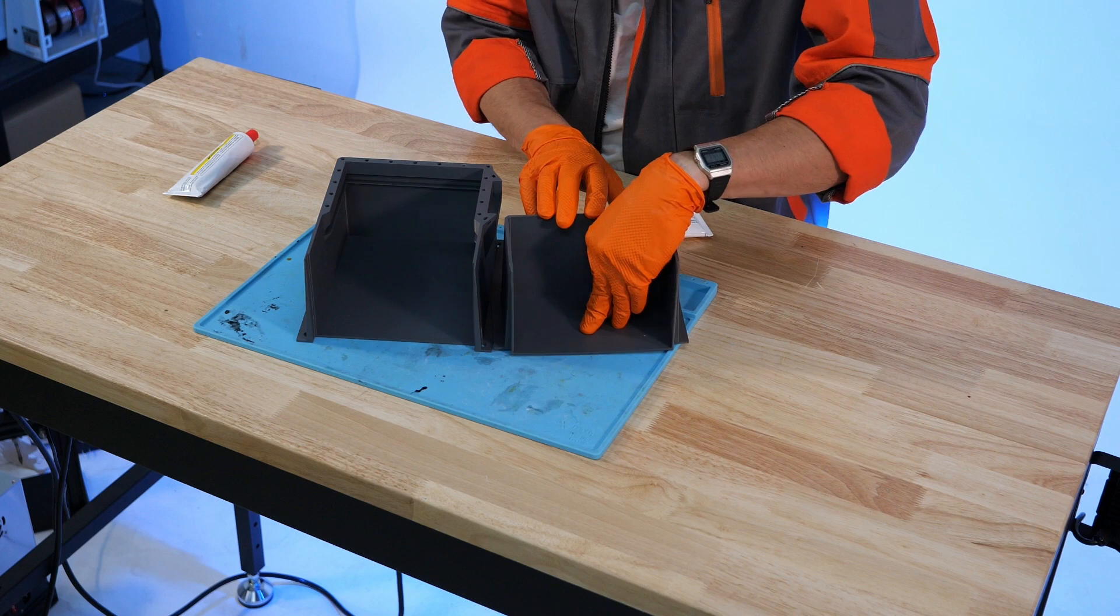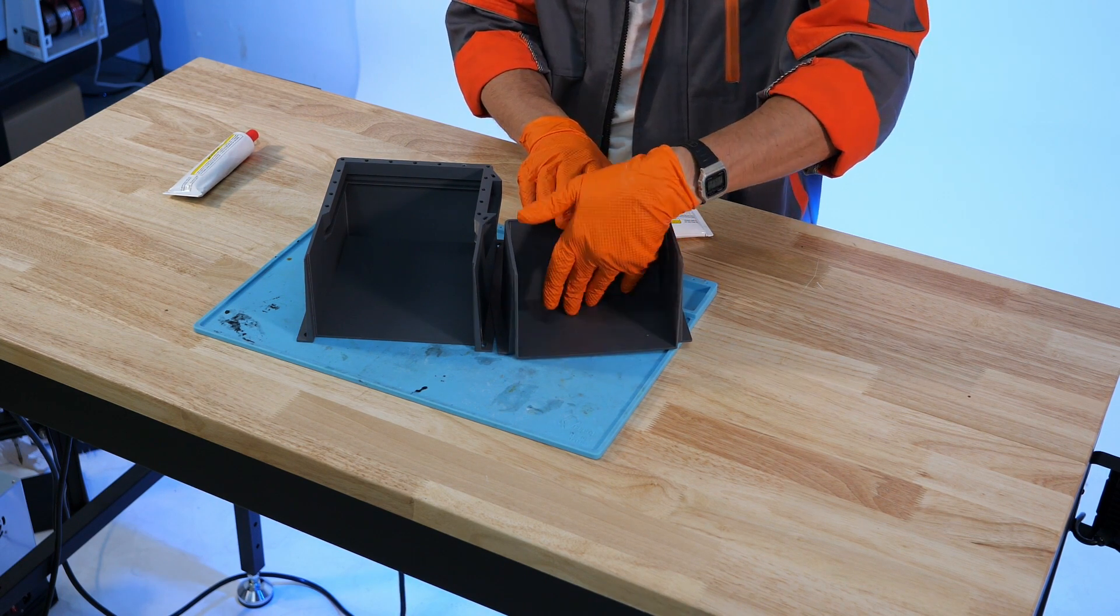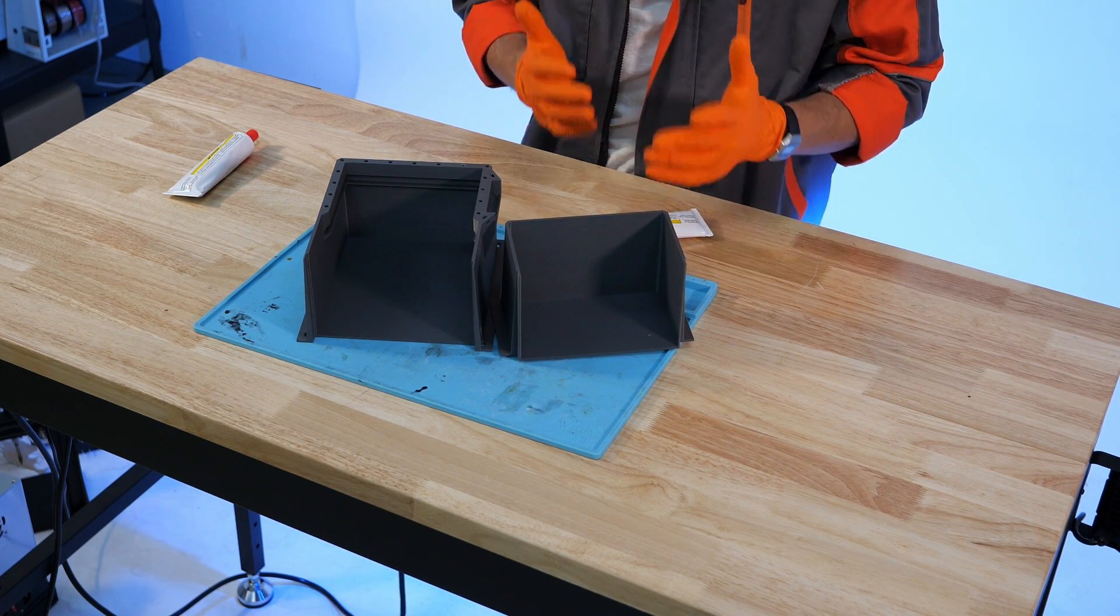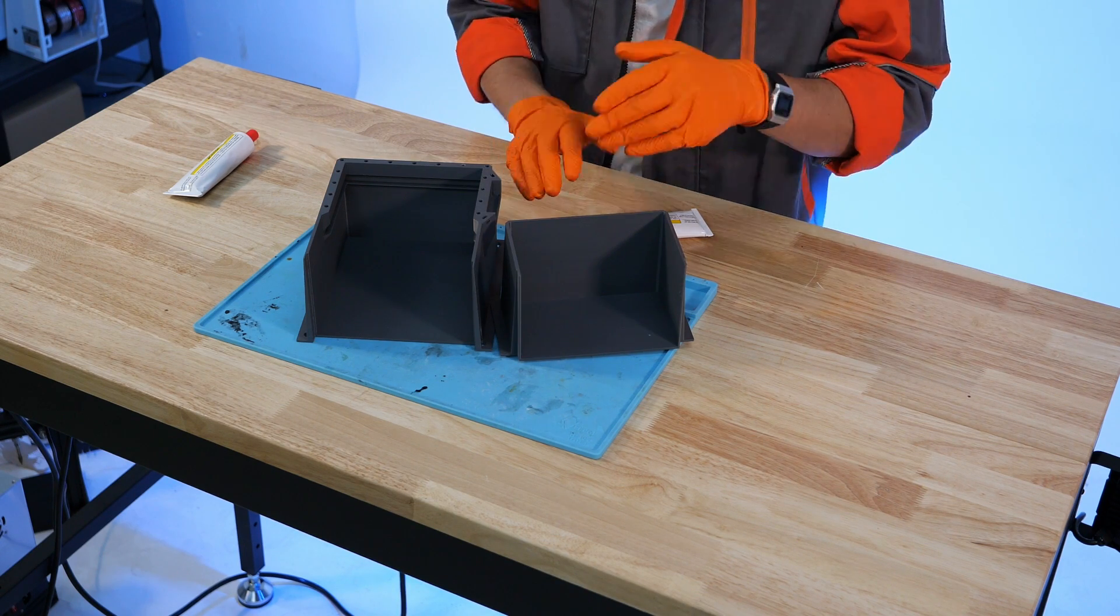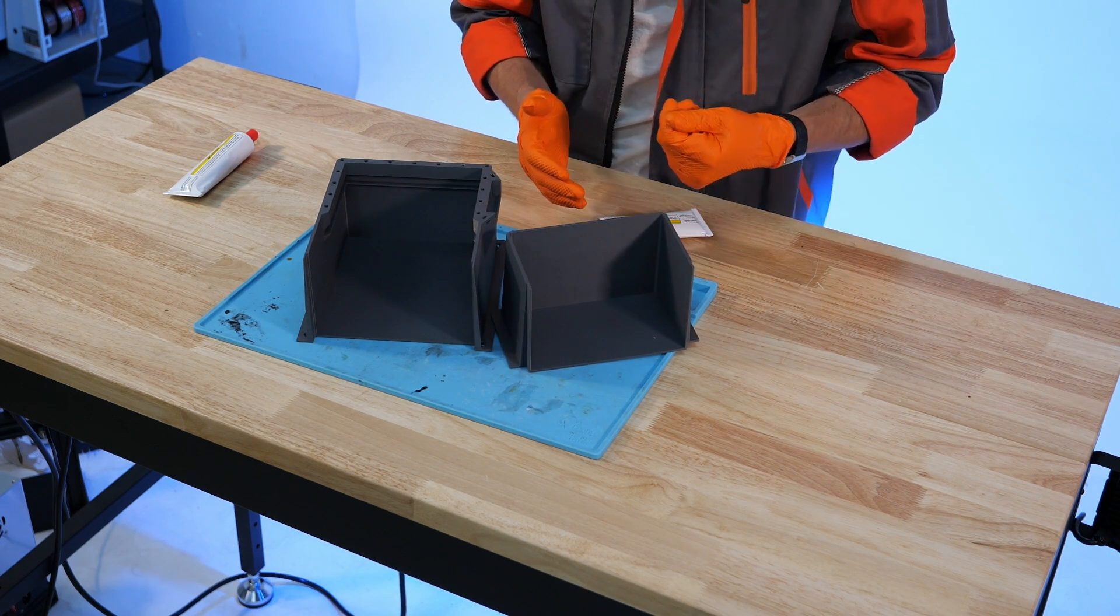We're going to start by mixing the epoxy within the vat itself. Since the epoxy doesn't need to be super accurate when it's applied, it's not touching or retaining any of the work, it's okay to mix right in here and then apply it roughly.